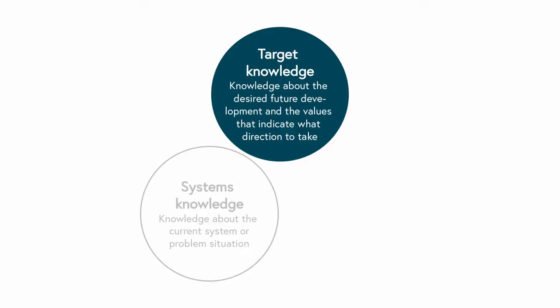Target knowledge is knowledge about the desired future development and the values that indicate which direction to take. It is deliberated by different societal actors and is based on values and norms. If you think about the water scarcity case, an example of target knowledge production would be the participatory scenario development by the different stakeholders.